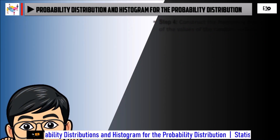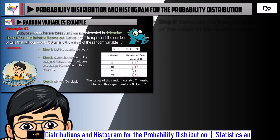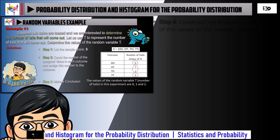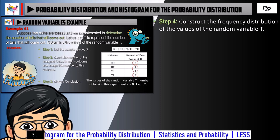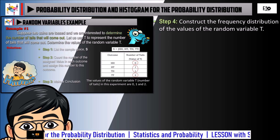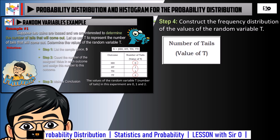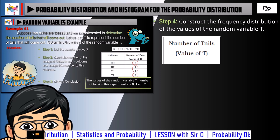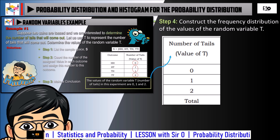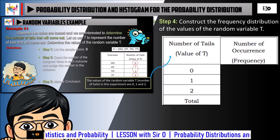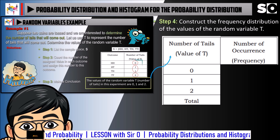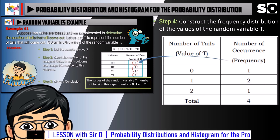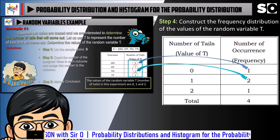Let us put it in an example for better understanding. We are going to use Example 1 in finding the random variables and continue in Step 4: Construct the Frequency Distribution of the Values of the Random Variable T. First, we will make a table. In the first column, you will put your answer from your conclusion in Step 3. In the second column, you will put the number of occurrence or frequency from Step 2, column 2. Then total all the occurrences or frequencies in the second column.